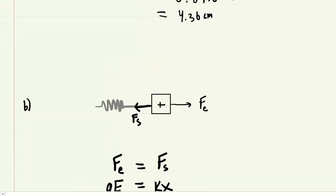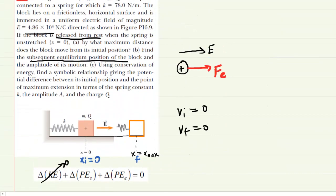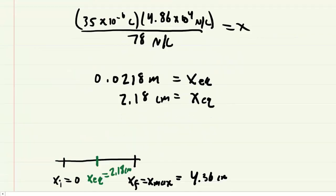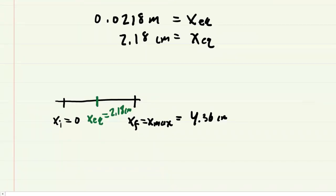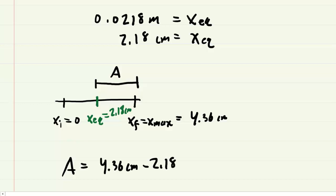Also in Part B, we need the amplitude of the motion. The amplitude is the distance from the equilibrium position to the maximum position. That amplitude is 4.36 centimeters minus 2.18 centimeters, which equals 2.18 centimeters. So the amplitude is 2.18 centimeters.